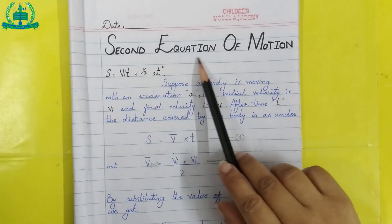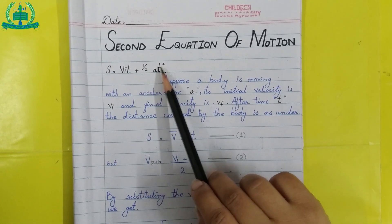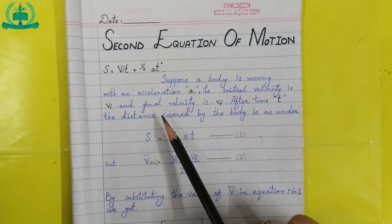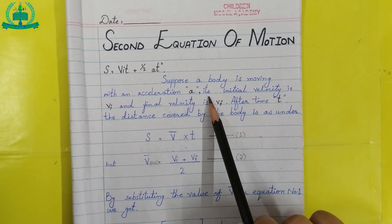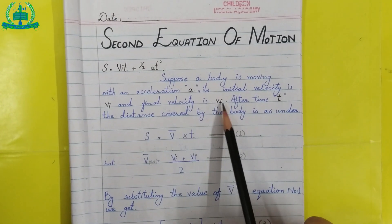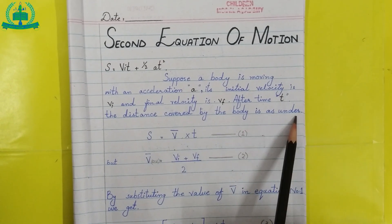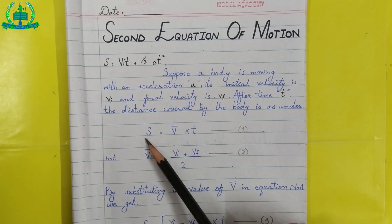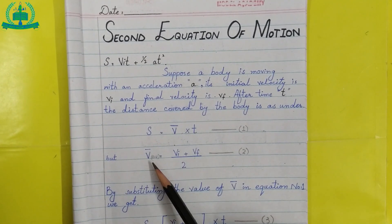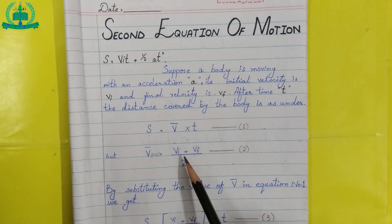Second equation of motion: s is equal to vi·t plus half at squared. Suppose a body is moving with acceleration a; its initial velocity is vi and final velocity is vf after time t. The distance covered by the body is: distance s equals velocity into time, but average velocity is given by vi plus vf upon 2.